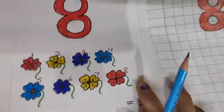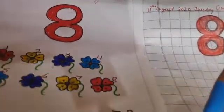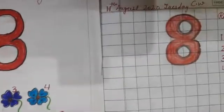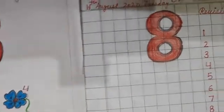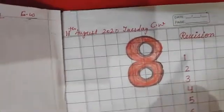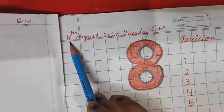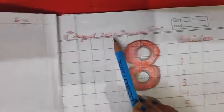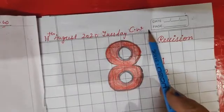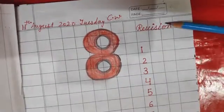Open your notebook. Take your pencil and eraser and this is your worksheet. This side also. Mama will write the date: 11th August, Tuesday, classwork. And this is for revision.